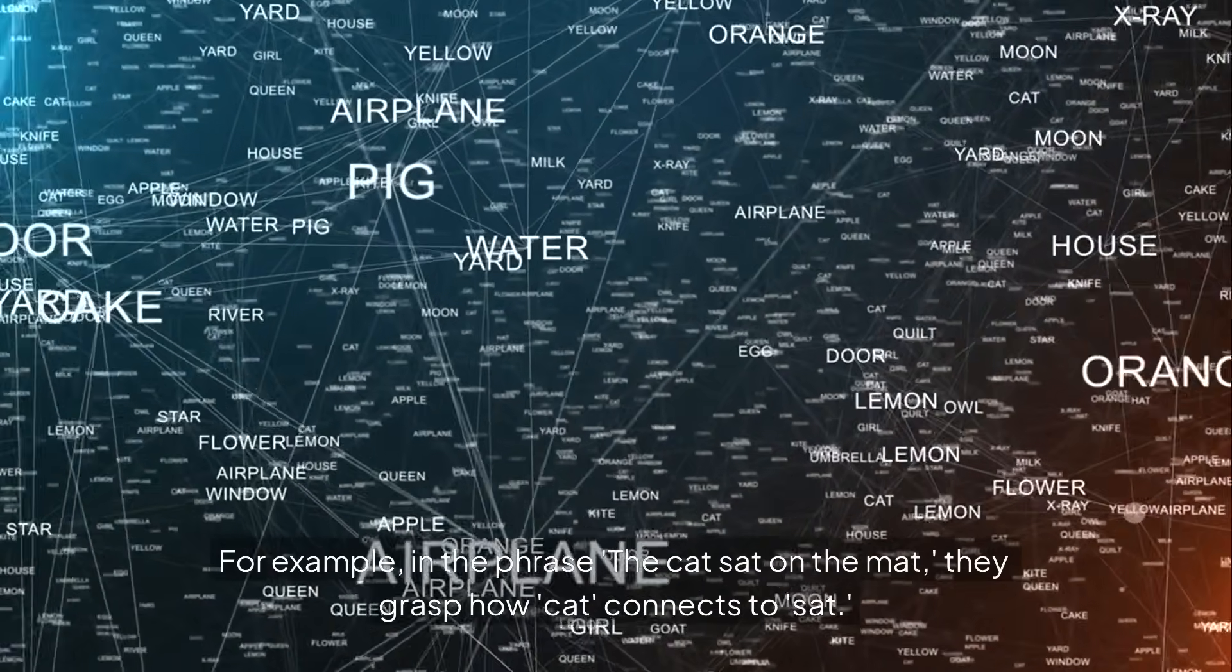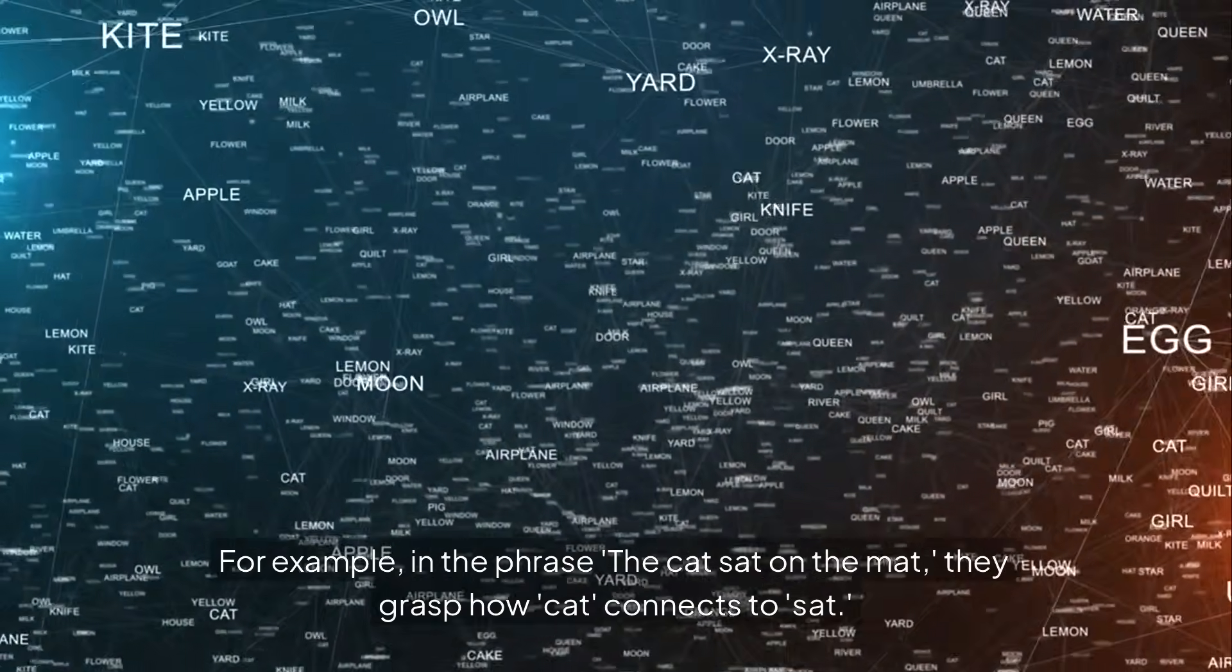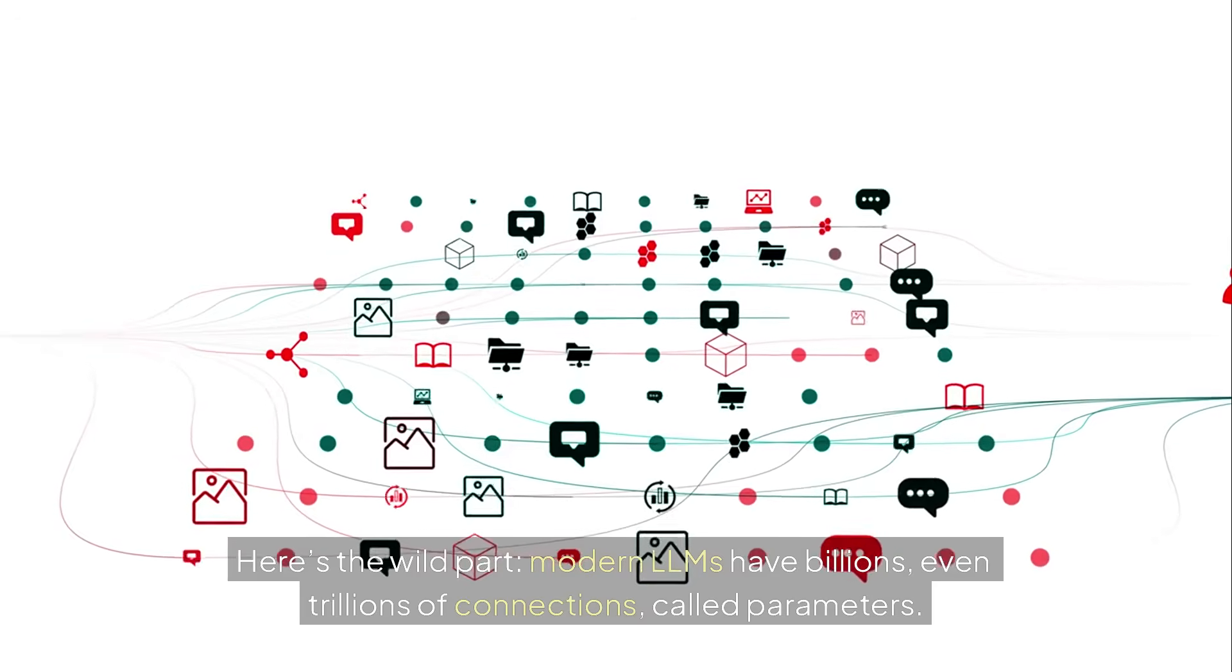For example, in the phrase 'the cat sat on the mat,' they grasp how 'cat' connects to 'sat.' Here's the wild part.